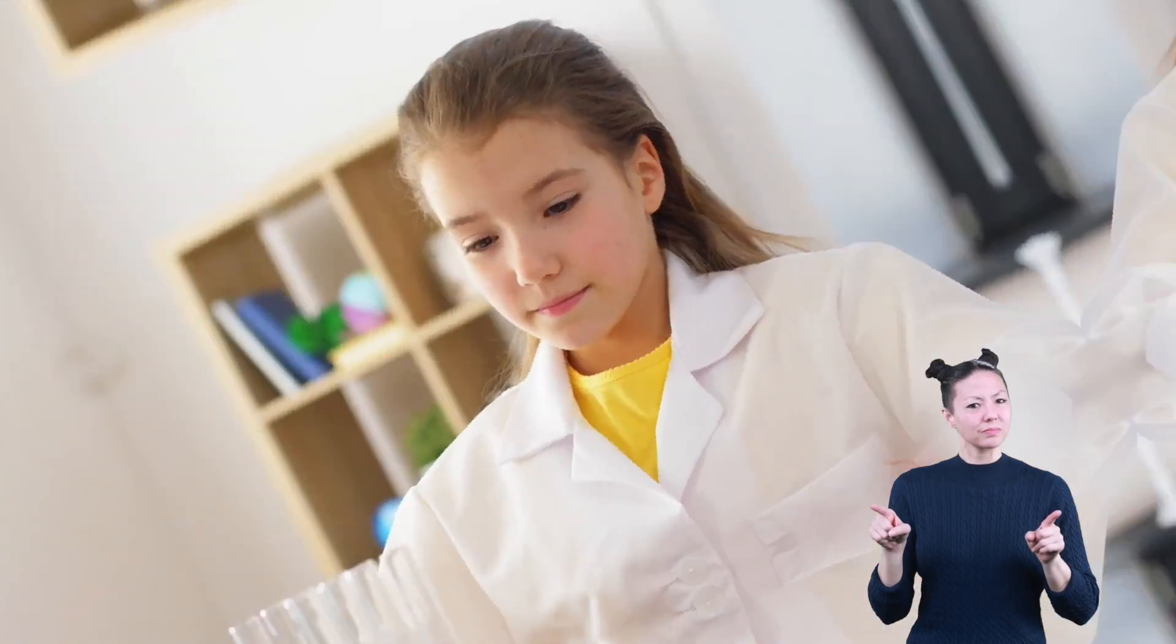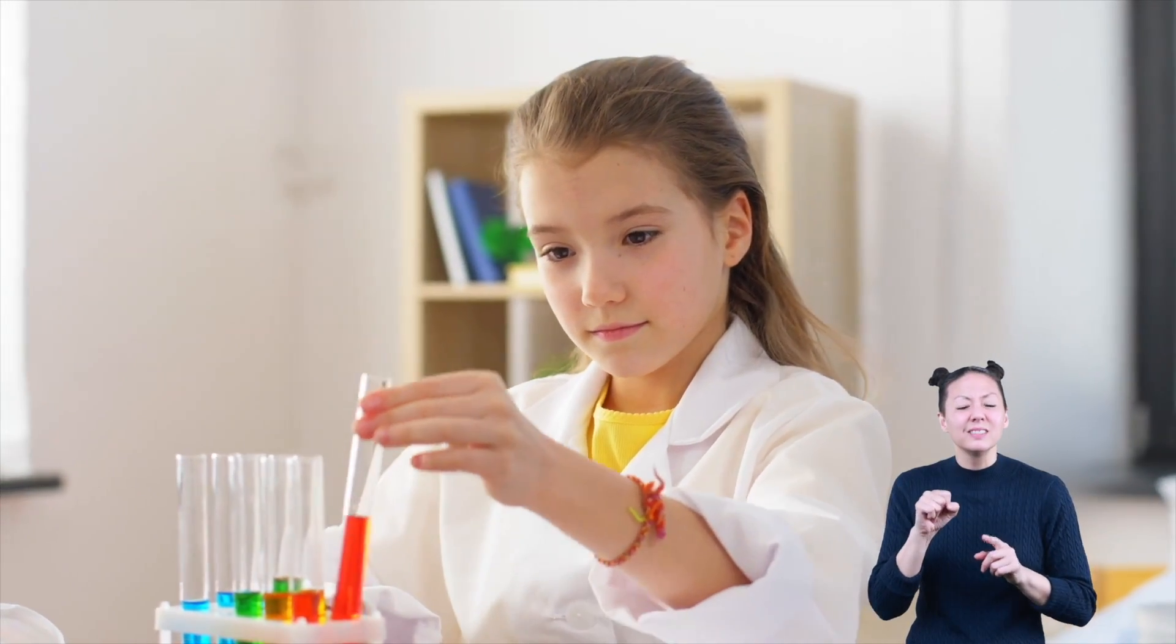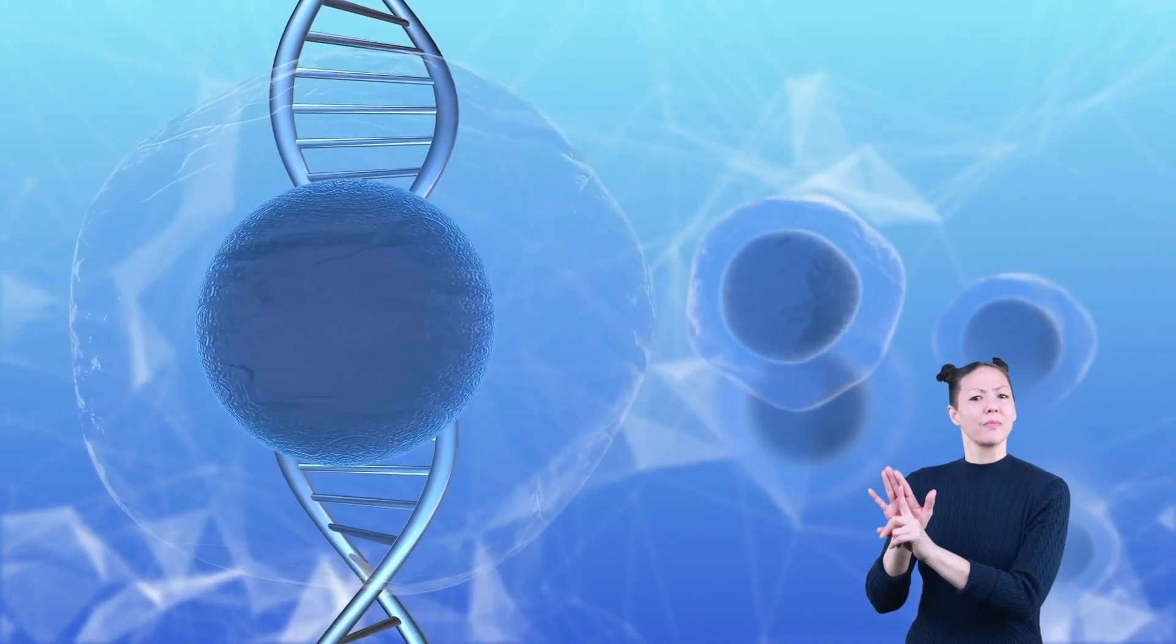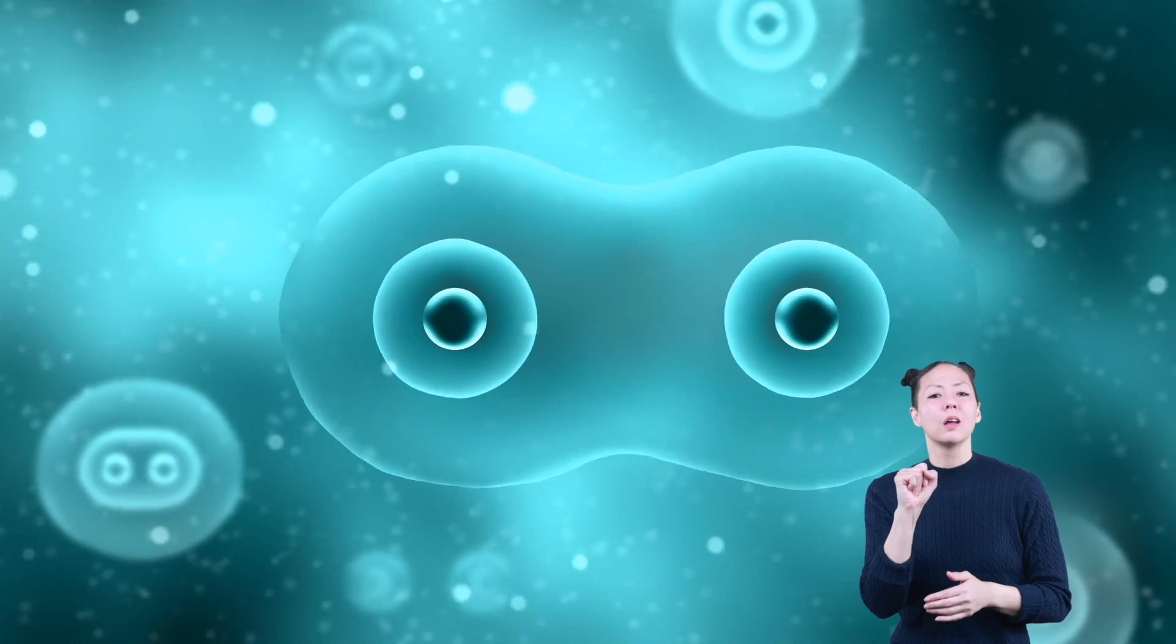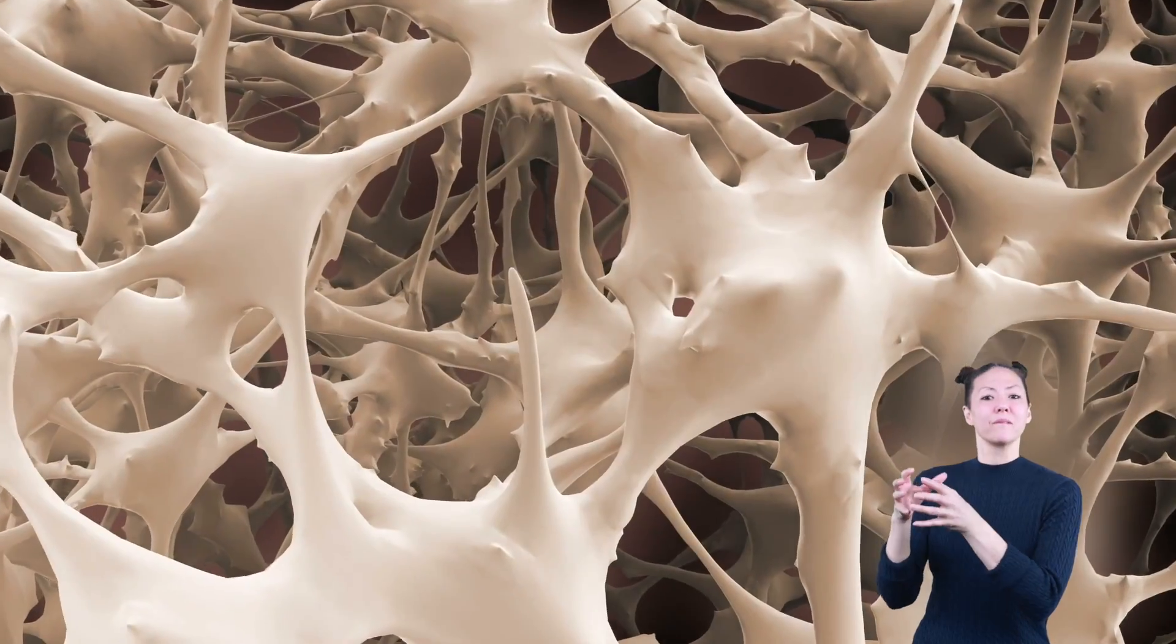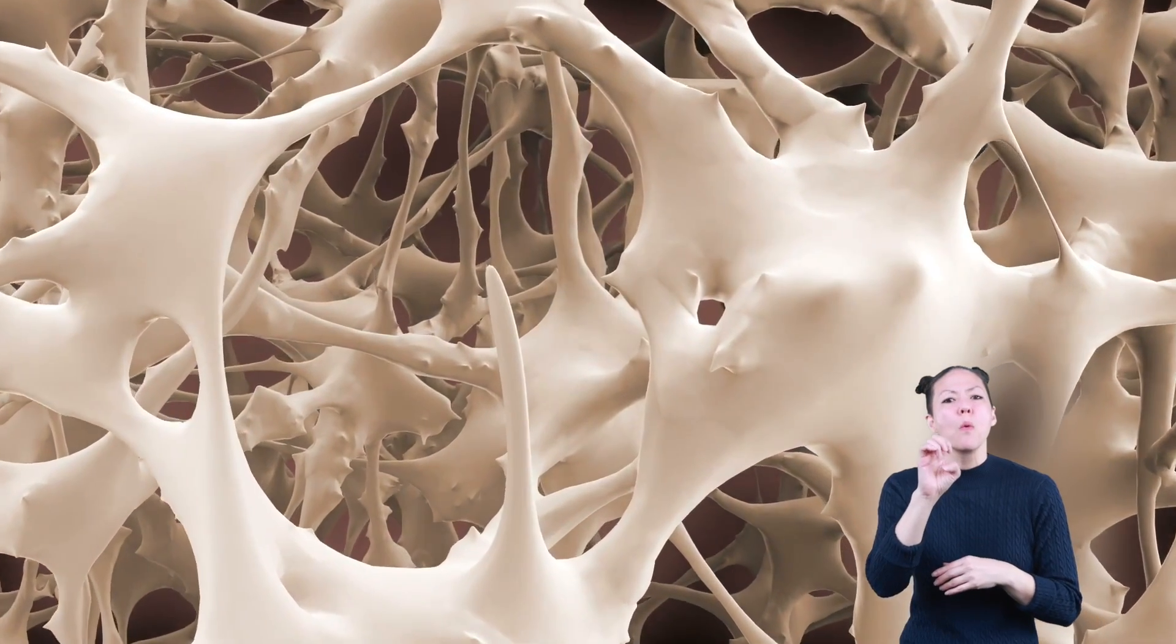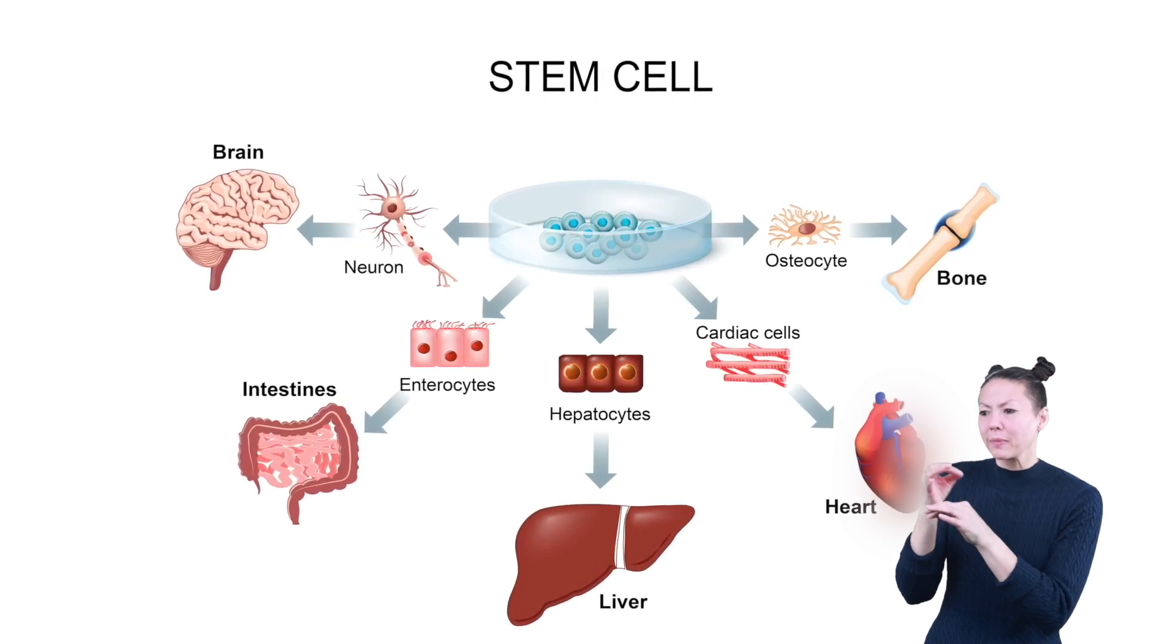There are some really amazing things that scientists can do with cells. Stem cells are unique special cells found in animals and humans. They produce new cells for our bodies as they grow. Some of these cells are found in your bone marrow, inside your bones. Stem cells can replace damaged or missing cells in your body.